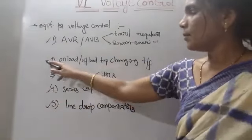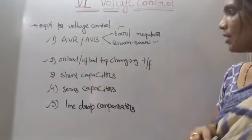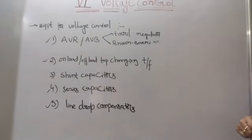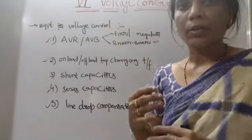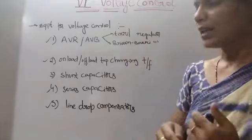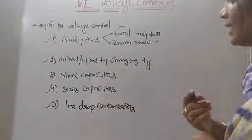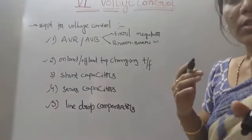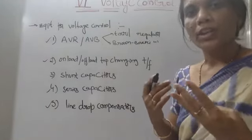In your syllabus you have AVR, series capacitors, and line drop compensators. In examination, tap changing transformers are frequently asked. The voltage control can be controlled by two ways: one is internal voltage control and external voltage control.